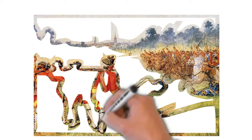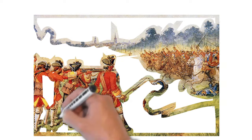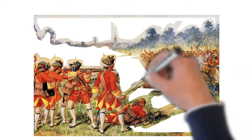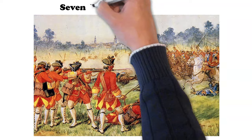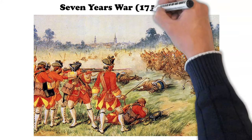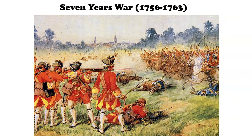The U.S. was just a small theater in this struggle, known as the Seven Years War, which is how the absolutist kings of Europe ended up supporting an insurrection built around the idea of the first modern democracy.